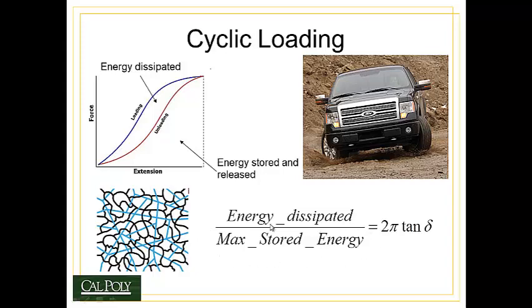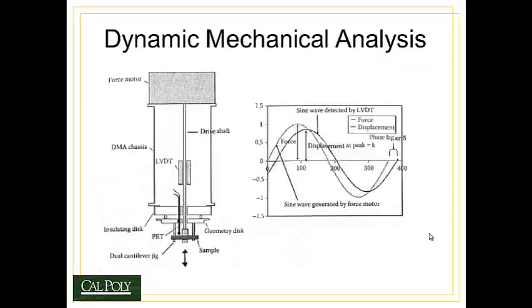We often want to know how much energy is dissipated as a proportion to the maximum amount of possible energy stored. So the maximum amount of possible energy stored would be the area under the loading curve, and the energy dissipated would be the area between the loading and the unloading curve. And this can be represented as 2 pi tan delta, where delta, or tan delta more correctly, is the loss coefficient.